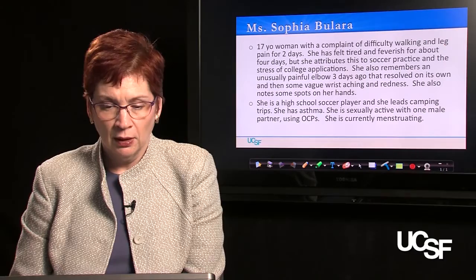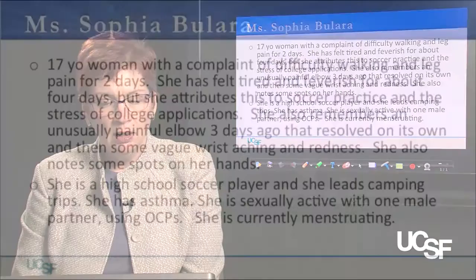Let's talk some more about Sophia Boulara, one of our patients from last week. Sophia is a 17-year-old woman who has a complaint of difficulty walking and leg pain for two days. She has also felt tired and feverish for about four days, but attributed the fatigue to soccer practice and the stress of college applications. She remembers an unusually painful elbow three days ago that resolved on its own, then some vague wrist aching and redness. She also notes some spots on her hand, but her major complaint today is leg pain. She's a high school soccer player who leads camping trips and is very interested in the outdoors. She has well-controlled asthma, is sexually active with one male partner using birth control pills, and is currently on her period.